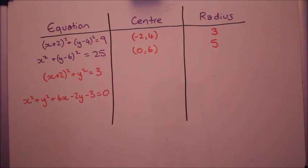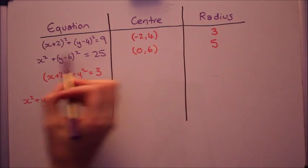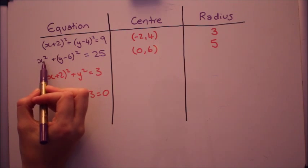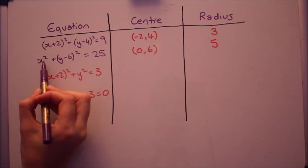This one, the only place where you might slip up is because of 0, it'll be x minus 0 squared. So you can just write that as x squared on its own. So if that doesn't have a number with it, that means that coordinate is 0.